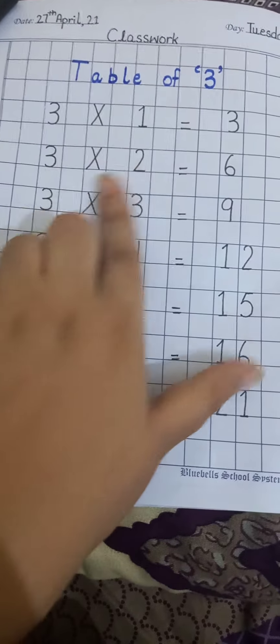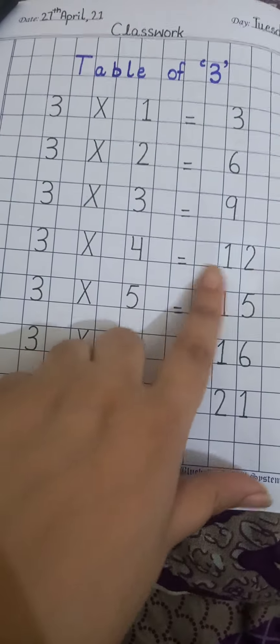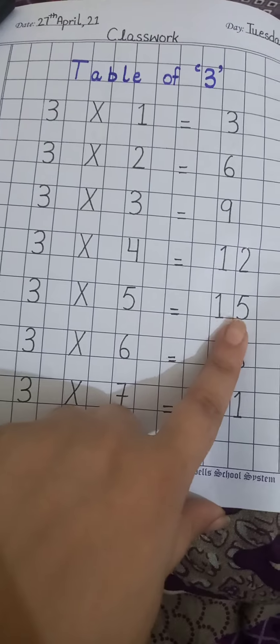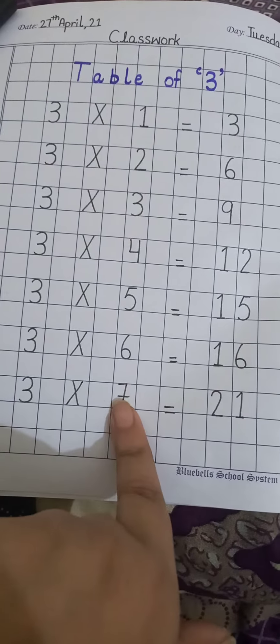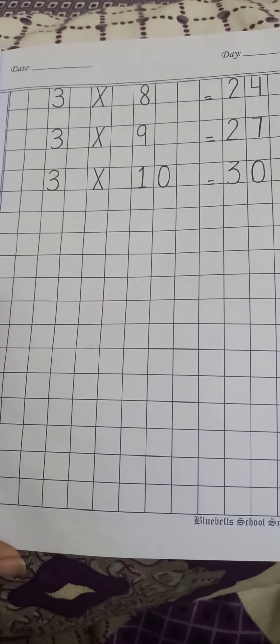Now we start our table: three ones are three, three twos are six, three threes are nine, three fours are twelve, three fives are fifteen, three sixes are eighteen, three sevens are twenty-one, three eights are twenty-four, three nines are twenty-seven.